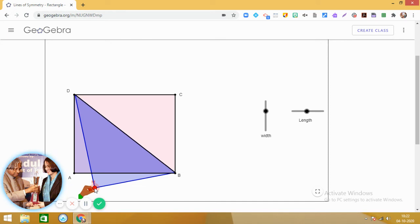No, there is no line of symmetry along the diagonal in a rectangle. You can see we are not getting two parts which are exact replicas of each other.